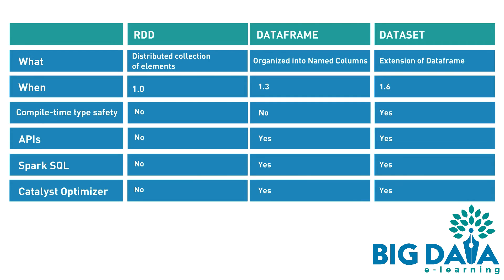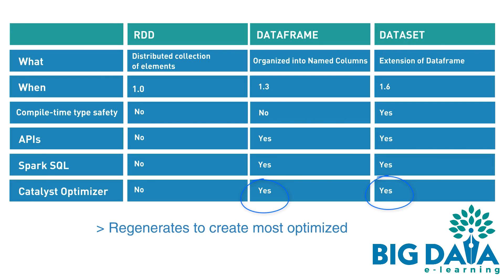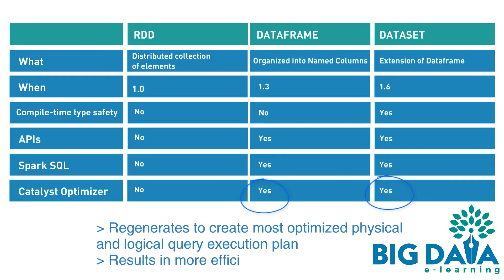Six: the Catalyst Optimizer is introduced in DataFrames, which optimizes performance by generating the most optimized physical and logical query execution plan. This results in more efficiency and speed. DataSets also leverage this functionality. However, RDDs don't have the benefit of the Catalyst Optimizer.